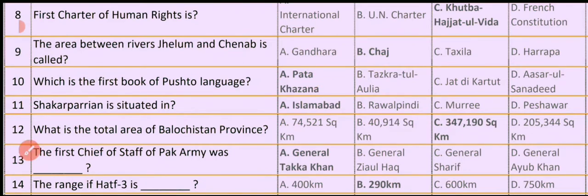Question No. 11. Shakaar Parian is situated in Option A. Islamabad Option B. Rawalpindi Option C. Murray Option D. Pishawad. So the correct option is Option A: Islamabad.